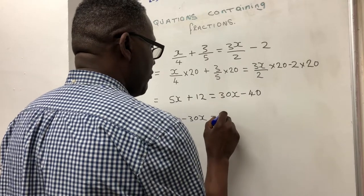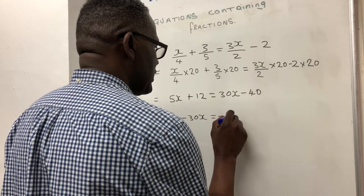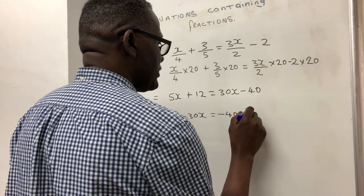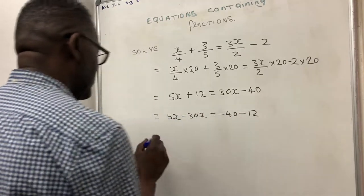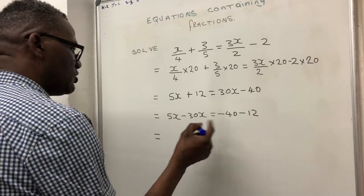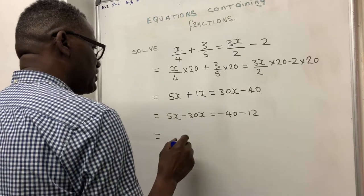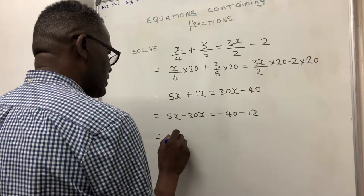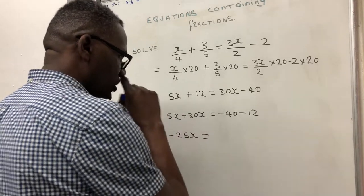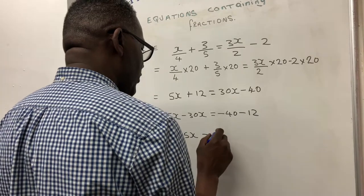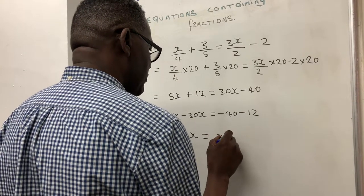5x - I'm going to move the 12, so I'm going to have -40 - 12, so it's changed from plus to minus. Now I do the sums: 5x - 30x gives me -25x = -40 - 12 gives me -52.